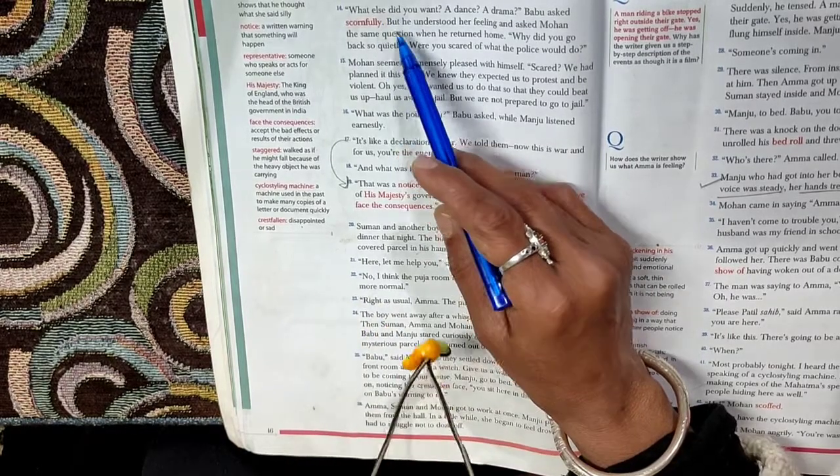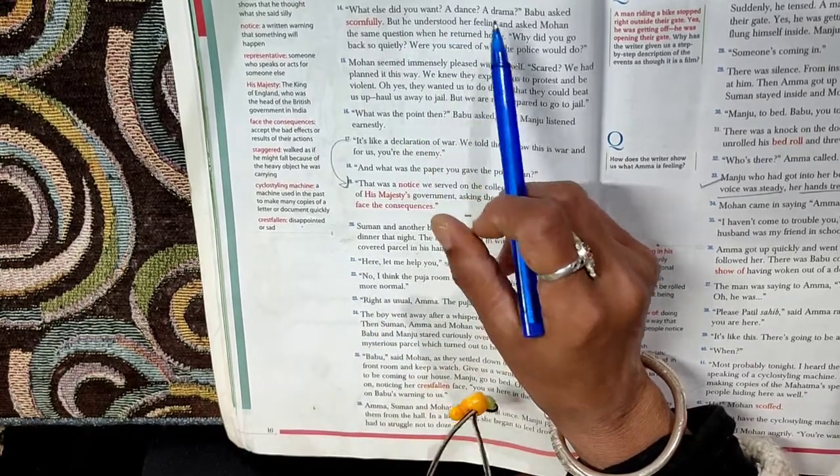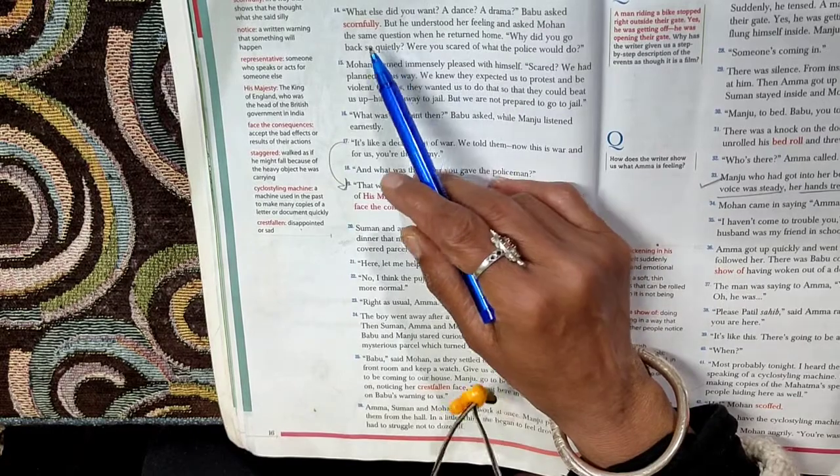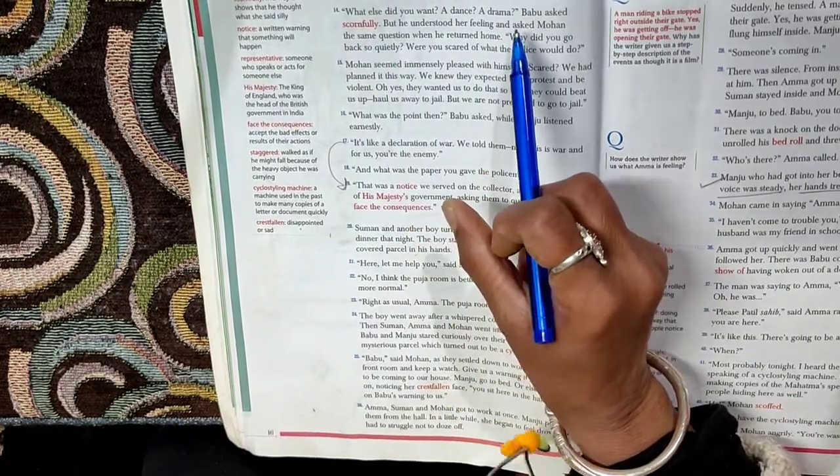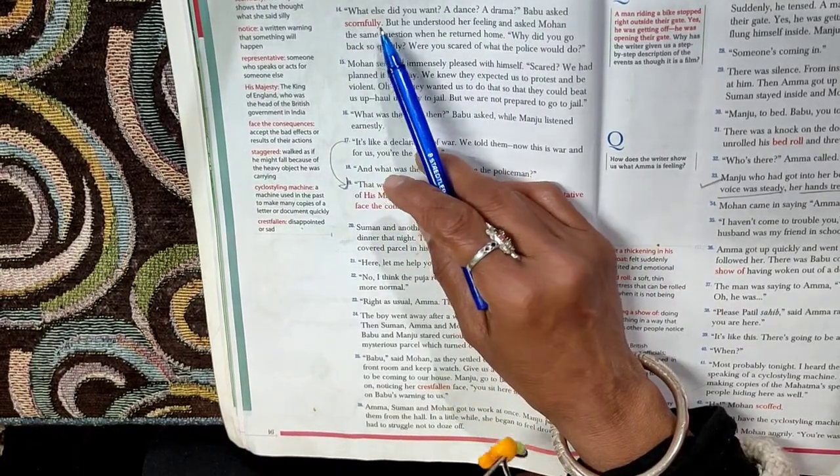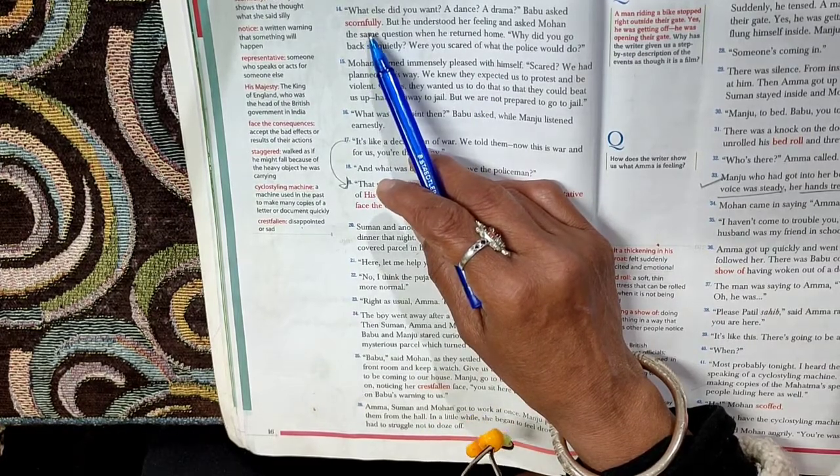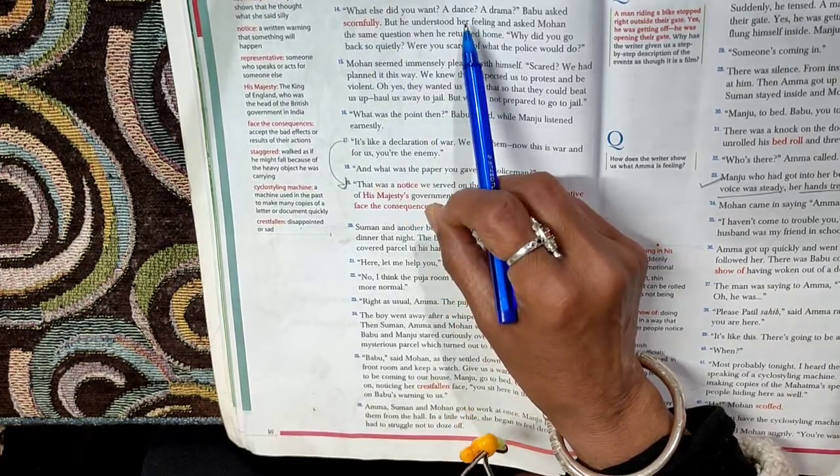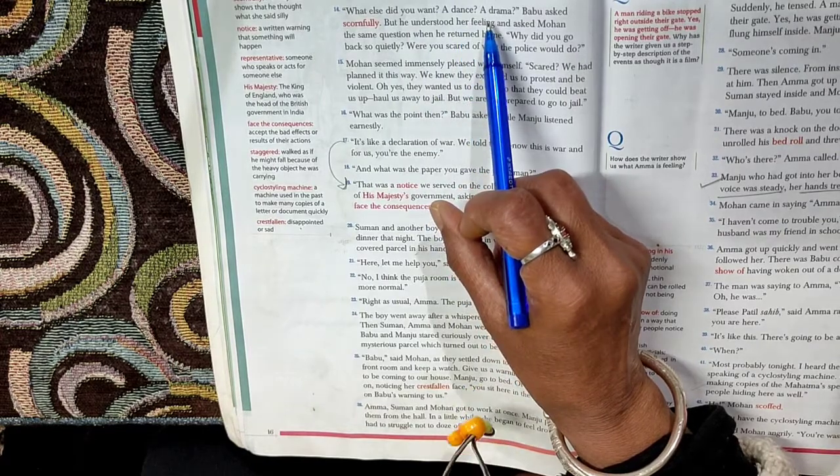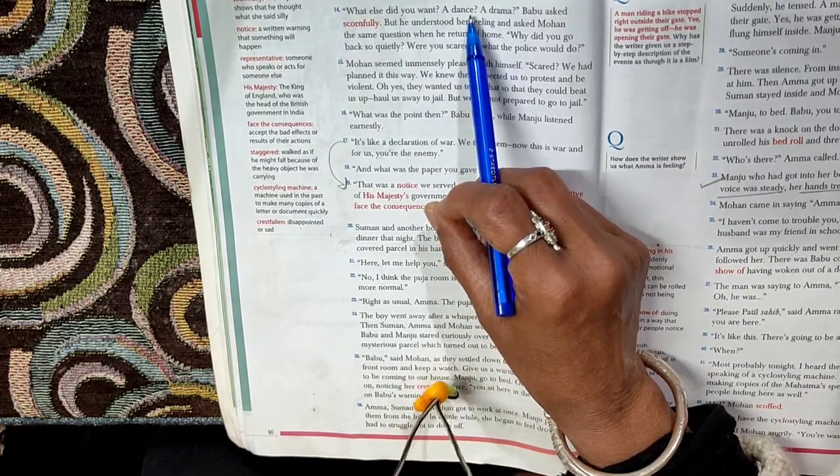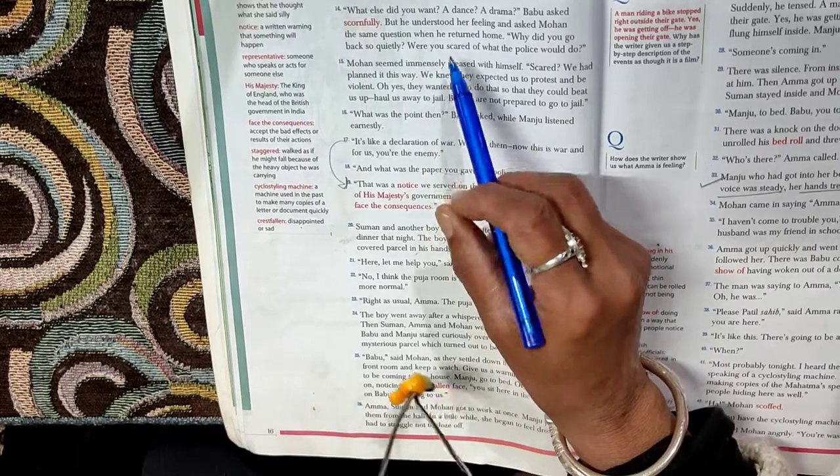Is that all? What else did you want? A dance? A drama? Babu asked scornfully. Now Babu is replying here to Manju and says to her, what else did you want? You wanted to see a drama here? Do you think it should have been a dance? So he is kind of being very sarcastic.